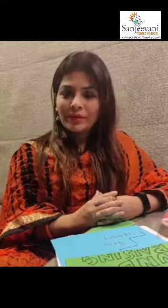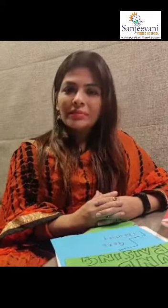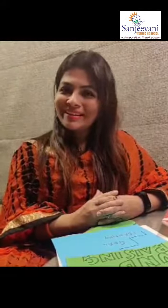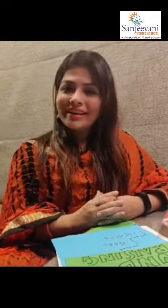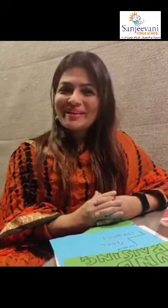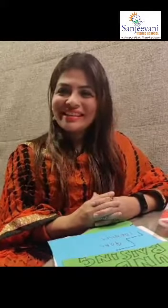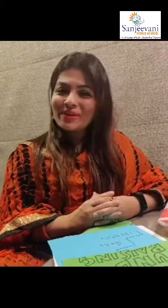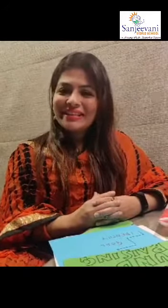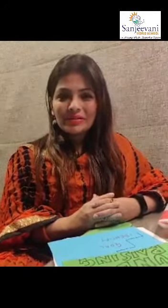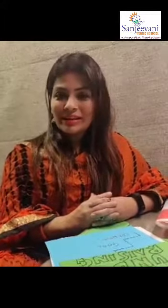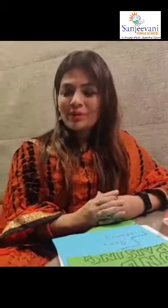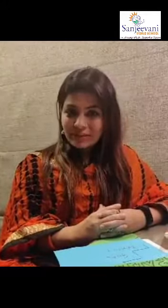Similarly, you can give an activity from a 10 rupee coin as well. Make the children understand that the more money you get, the more you need to think about saving and donating. Let us make them understand the importance and the value of money right from the foundation years. Allow them to spend, allow them to save, and allow them to think about others — that is, allow them to donate. Thank you so much. Have a good day.